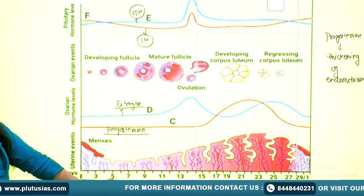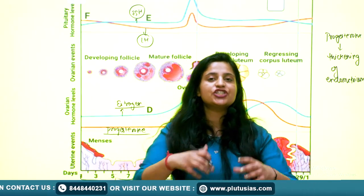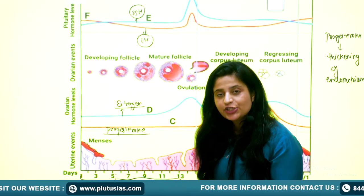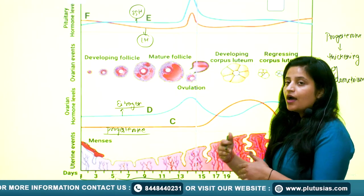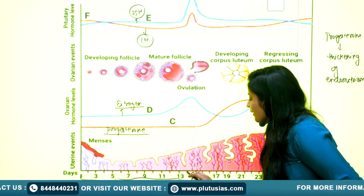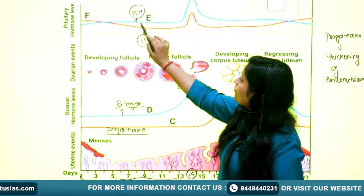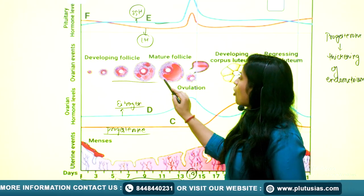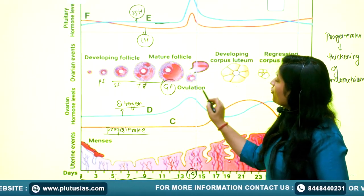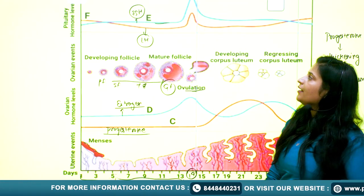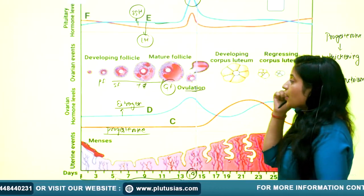Days 5 to 13 are known as the proliferative phase. 'Proliferation' means to multiply. The broken endometrium is regenerated with the help of estrogen — estrogen causes re-thickening. Blood vessels are also repaired. By the 14th day, estrogen levels are increased, regeneration is complete, and FSH is releasing, causing development of follicles — primary, secondary, tertiary, and Graafian follicle.